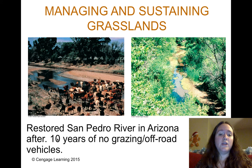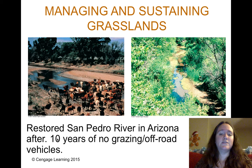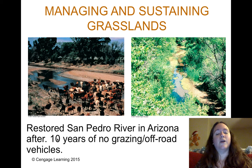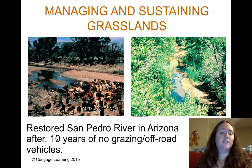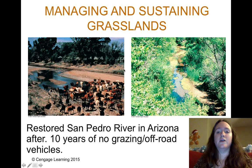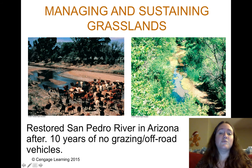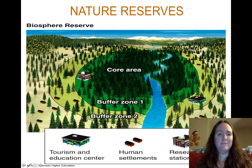What can we do? We can ban grazing or prohibit off-road vehicles in areas. One example in Arizona shows what a river area looked like after restrictions and what it looks like 10 years later — demonstrating that we can manage it sustainably.